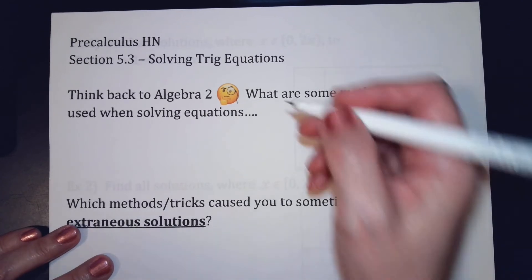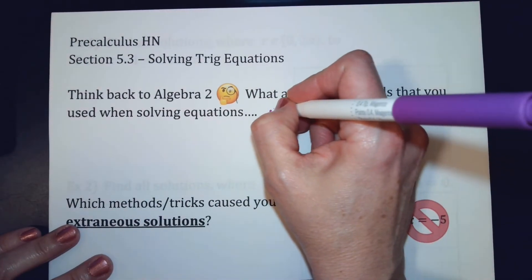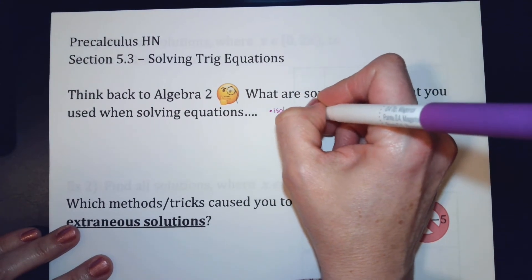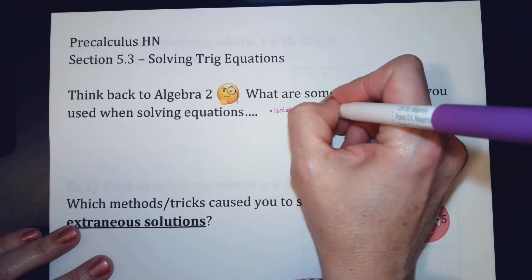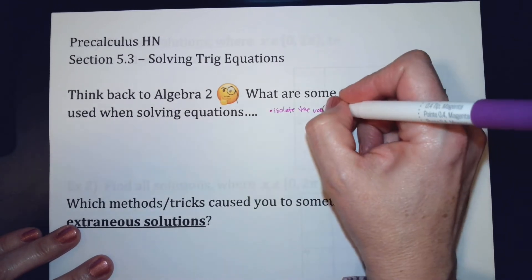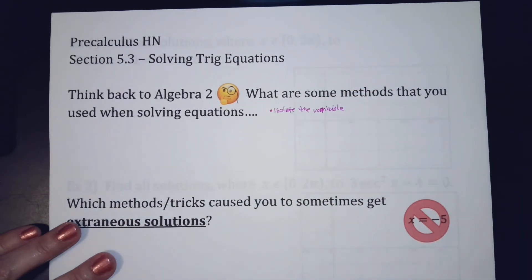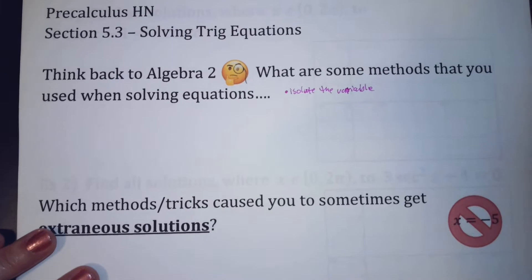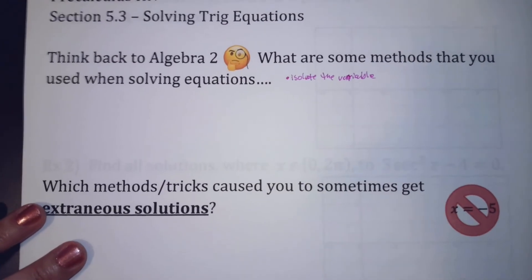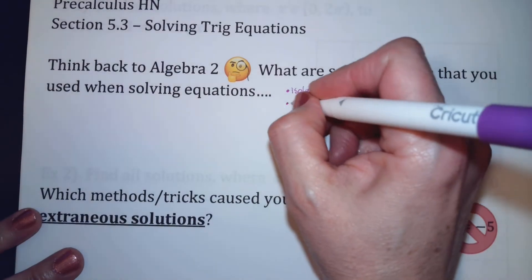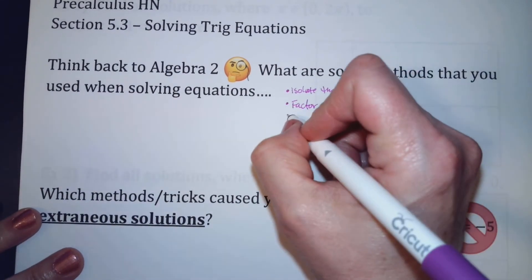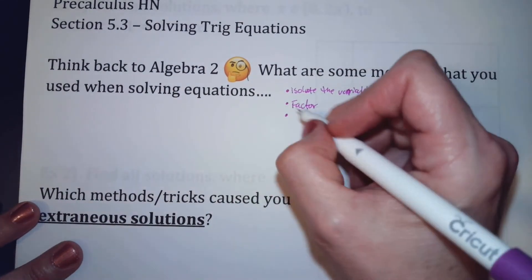So if you have a basic algebra problem, one of the things you do is you isolate the variable. Another thing you could do — maybe remember you used to factor, right? Another thing: cross multiply.